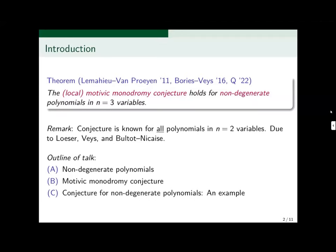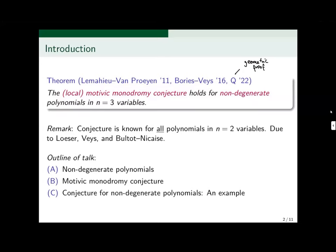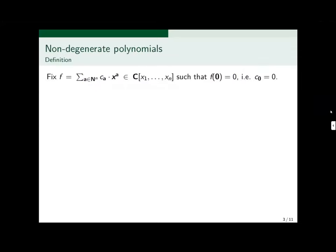This theorem was already known before, but those people used some roundabout methods. My proof is actually a geometric proof. Now I'll begin. First, I'll introduce what it means for a polynomial to be non-degenerate.